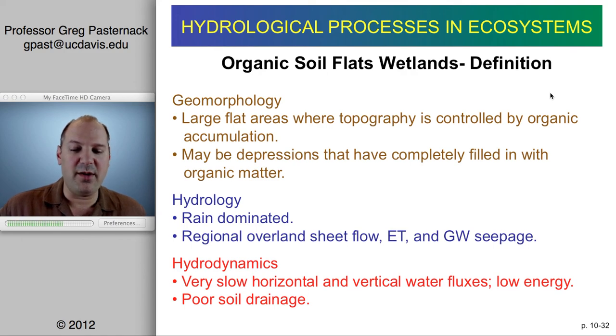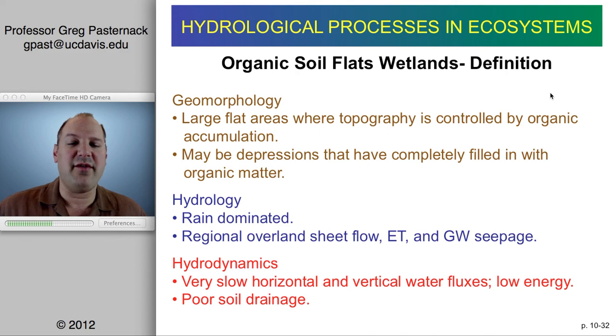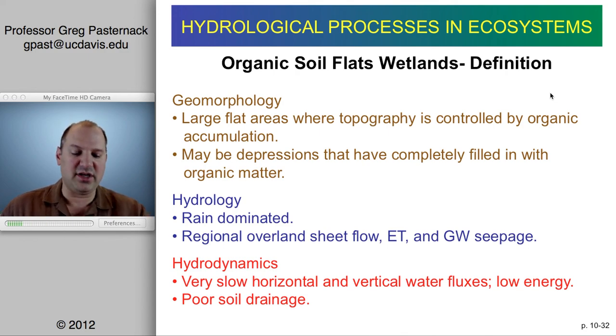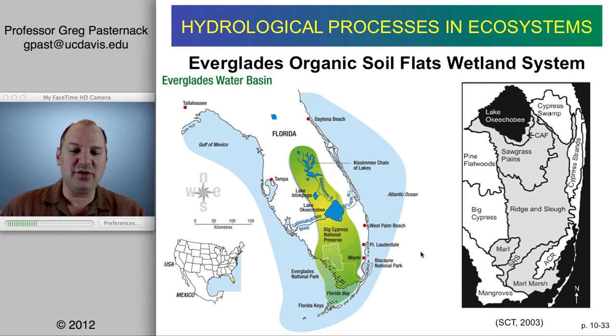Organic soil flats are very large flat areas, usually at the lowest bottomland areas. They can be depressions but may have been completely filled in. Like mineral flats, they're rain-dominated, usually with more of a vertical water balance, but not always — there can be regional horizontal sheet flow as occurs in the Florida Everglades. Again, very poor soil drainage, but here we do tend to have accumulation of organic matter over time.